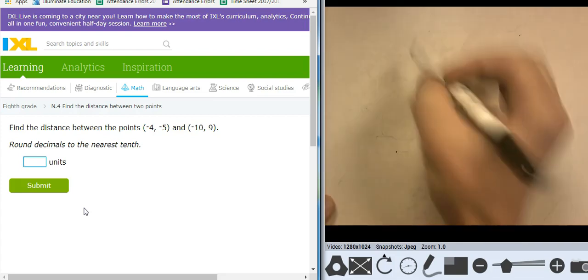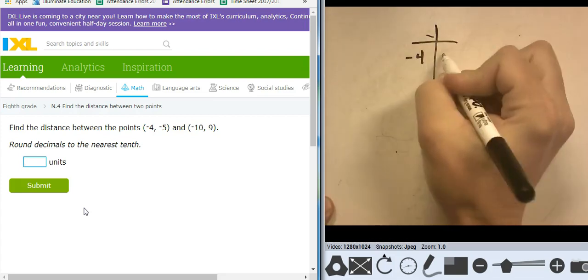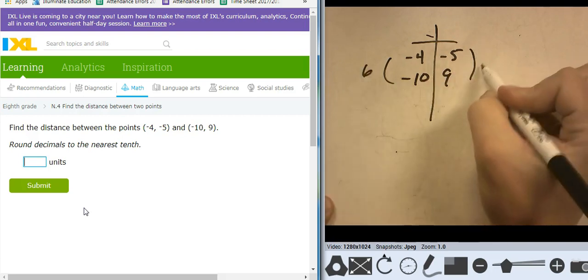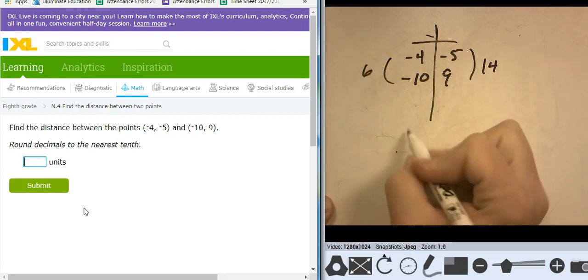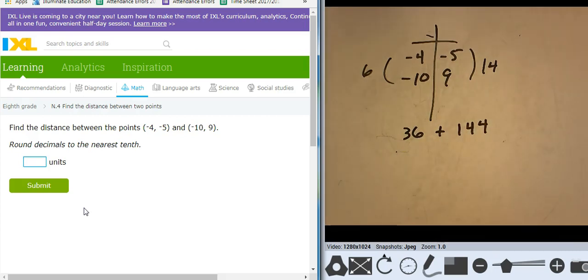Okay. This one looks a little bit more challenging. Negative 4 to negative 5. Negative 10 to 9. No, it's not. Change of 6. Change of 14. So this is 36 plus 144. So it's 180. Square root of 180 is 13.41. So 13.4 with the correct rounding.